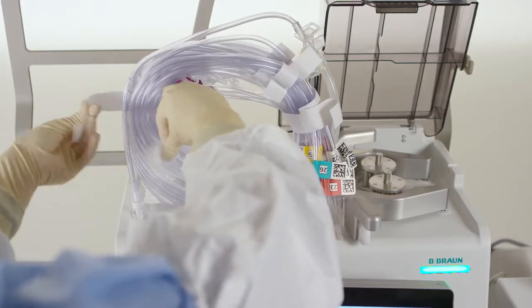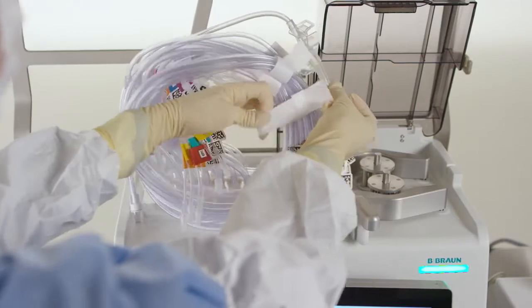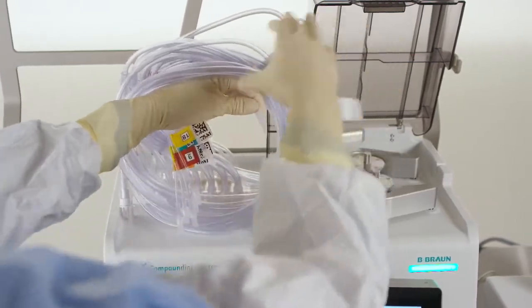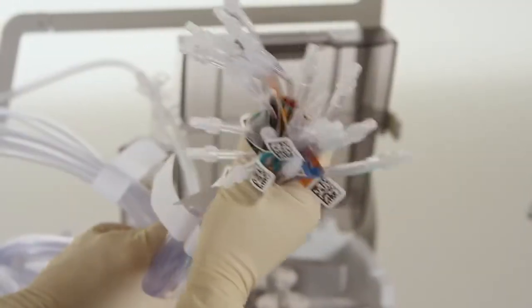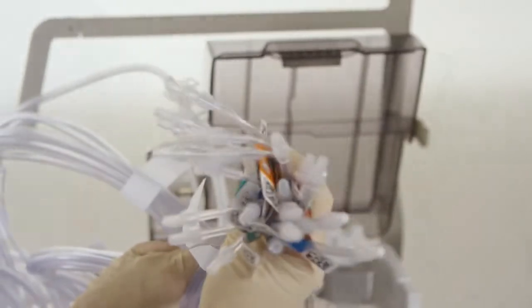Remove the two tapes that surround all of the transfer set lines. As you uncoil the lines, inspect each one for kinks and to ensure that all of the caps are in place. If any of the caps are off any of the lines, discard the transfer set.